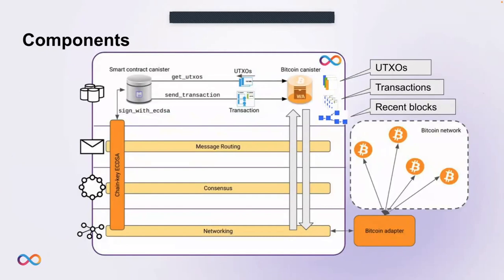Let's look at how the integration is actually implemented. It consists of two components. The first is the Bitcoin canister, which lives on a Bitcoin-activated subnet and is implemented as a regular NNS-managed system canister. It's made accessible to canisters via the management canister API. The Bitcoin canister holds the on-chain Bitcoin-related state: the UTXO set, outgoing transactions, and the most recent Bitcoin blocks to allow for fork resolution.